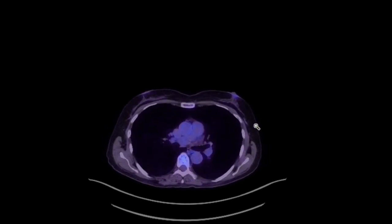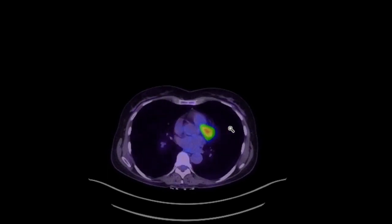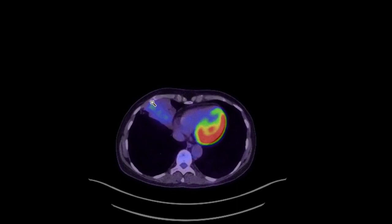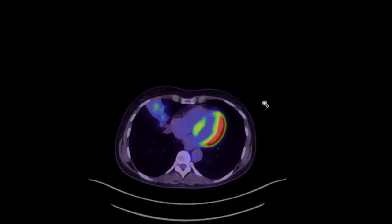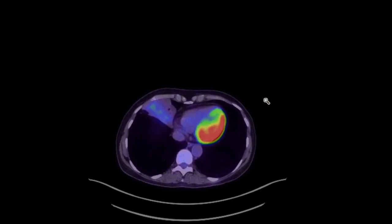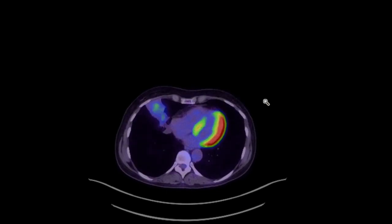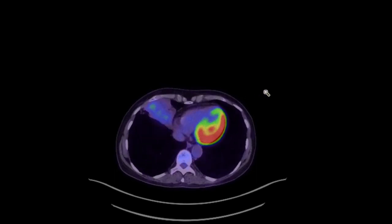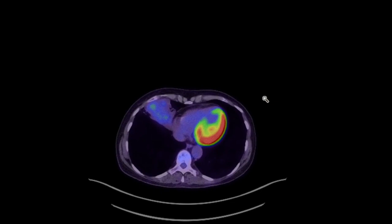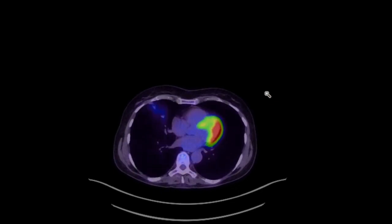A PET scan was performed for staging. We can see that the mediastinum and the pulmonary hilum is normal with no areas of abnormal FDG uptake. Scrolling down, we can see this area of consolidated lung with just a little bit of faint FDG avidity — interestingly, not as avid as we would expect for a cancer. However, given this lady had a proven adenocarcinoma of the lung, was in good performance status with adequate lung function, and had no evidence for metastasis to the hilar or mediastinal lymph nodes, she underwent resection with a right middle lobectomy. The lobectomy specimen showed the majority of the consolidated lung was adenocarcinoma, the resection margins were clear, and all resected lymph nodes were negative for metastases — so this should be curative surgery.